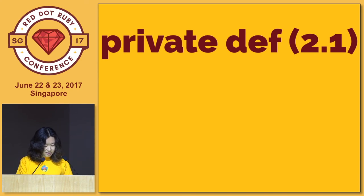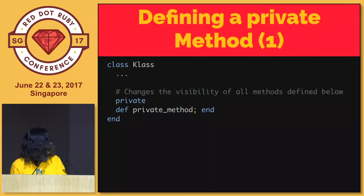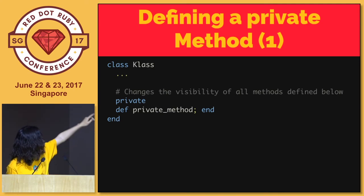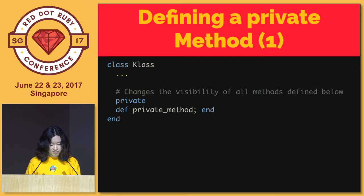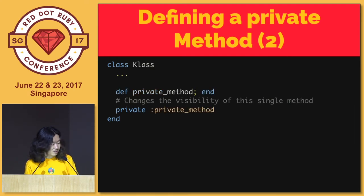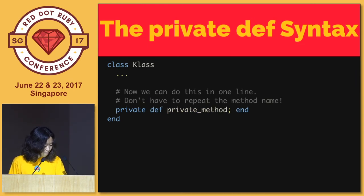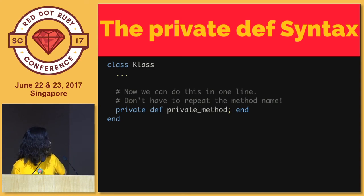Here's another topic: Private. There's a tiny improvement around method visibility in Ruby 2. In order to define a private method, we had to define the method below a private call - all methods below become private - or the private call takes a symbol of the method name. Just like C++ or Java, recent Ruby versions can do this: place private or public directly before the def statement. It's revolutionarily handy - you don't have to repeat the method name twice.